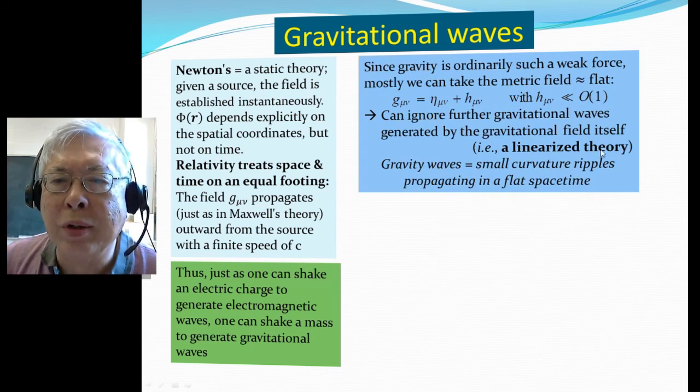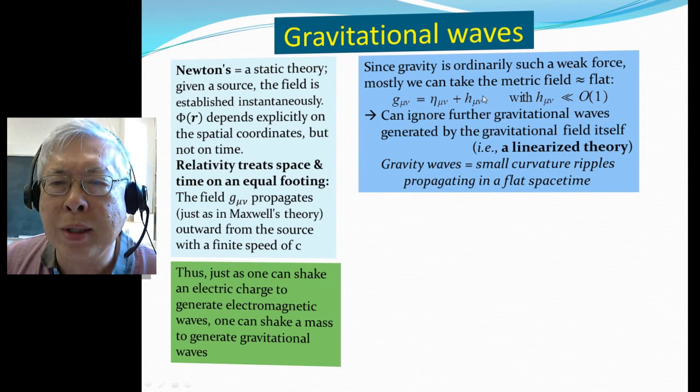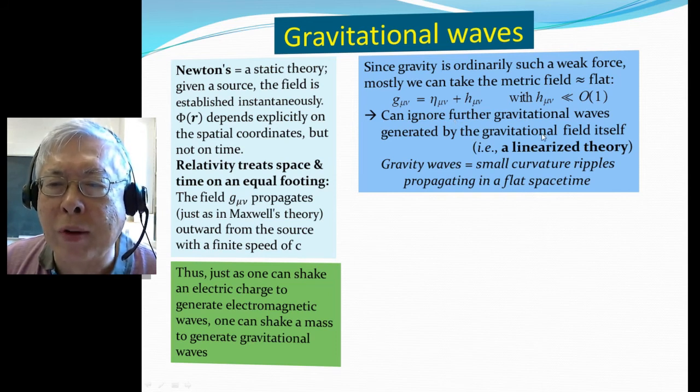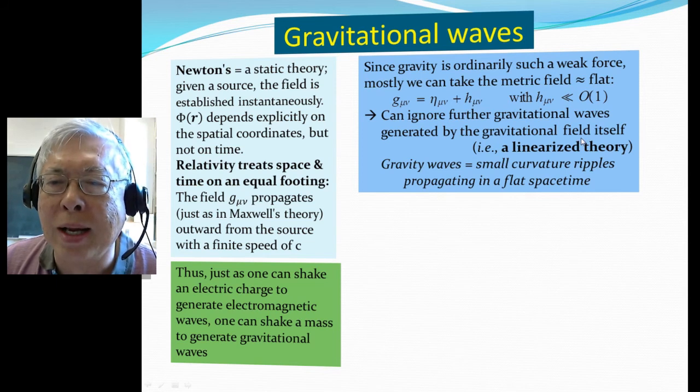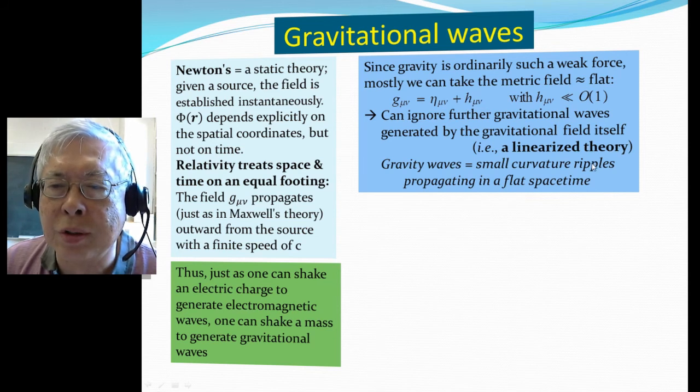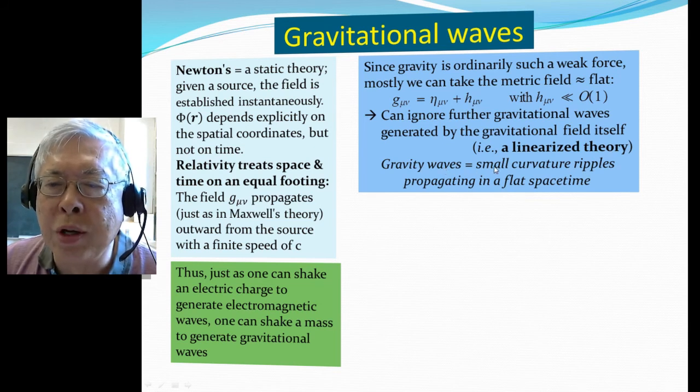Since gravity in ordinary cases is an extremely weak force, mostly we can take the metric field to be almost flat, meaning g_μν equals η_μν plus a small correction h_μν. We can ignore further gravitational waves generated by the gravitational field itself, so we can linearize the theory. In this approximation, the gravitational wave can be viewed as small curvature ripples propagating in a flat spacetime.